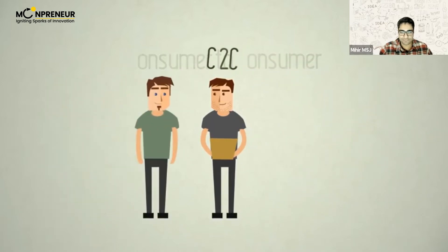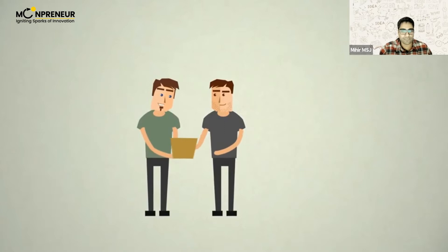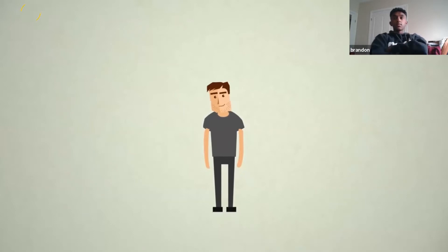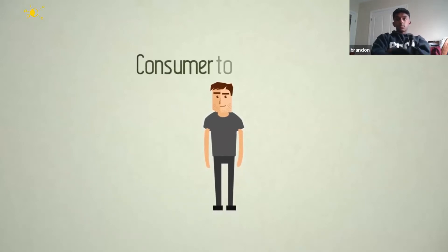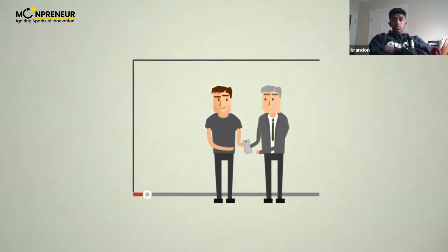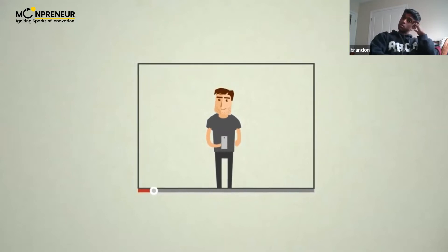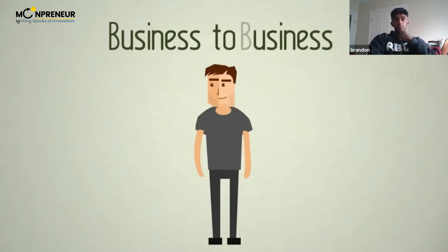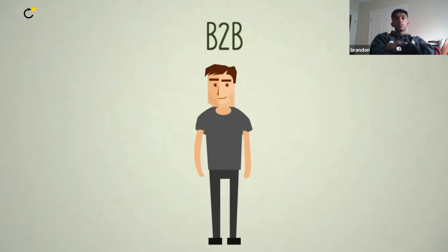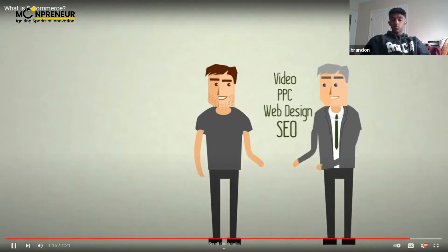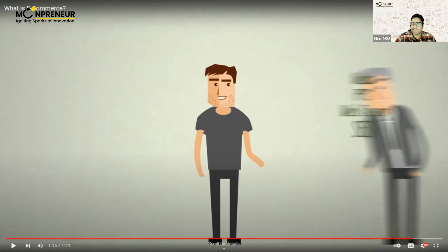Consumer to consumer — C2C — is when goods are sold between consumers through internet marketplaces or online classified ads. eBay and Gumtree are prime examples. Consumer to business — C2B — involves a consumer providing a product or service to an organization; for example, a blogger reviewing a product for a business and receiving payment or goods. Business to business — B2B — is where business is conducted between two companies, such as a digital agency selling services to other businesses.